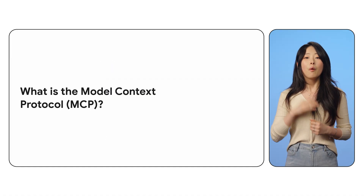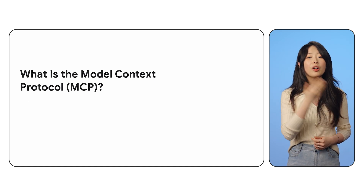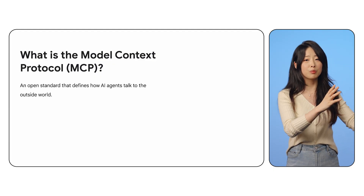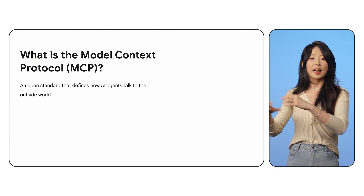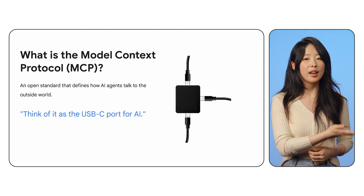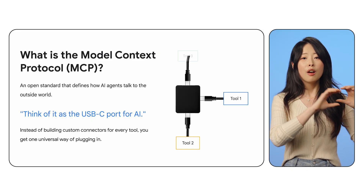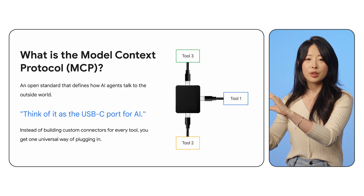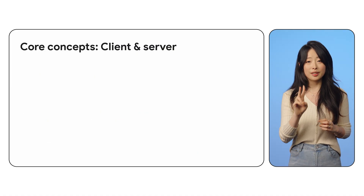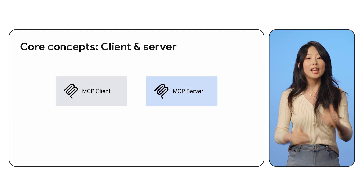So the first part is: what is an MCP server? At its core, the Model Context Protocol is an open standard. It defines how large language models and AI agents can talk to the external world. Think of MCP as a USB-C port for AI — instead of building a custom connector for every single tool, you get one universal way of plugging in. And there are two important concepts in the setup: the MCP client and MCP server.